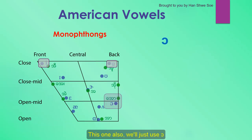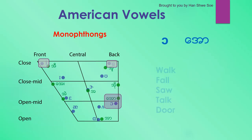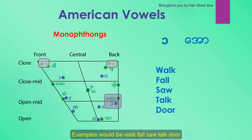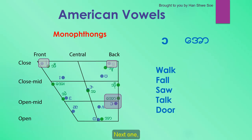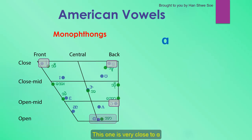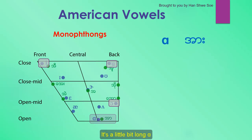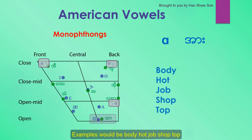The next monophthong, we'll just use O. Examples would be: walk, fall, saw, talk, door. The next one is very close to A — we'll use the sound A, but it's not very long. It's a little bit longer than a short vowel. Examples would be: body, heart, chop, sharp, top.